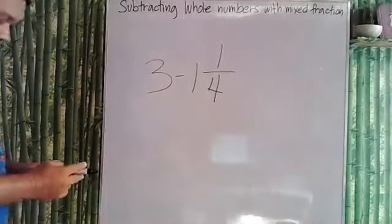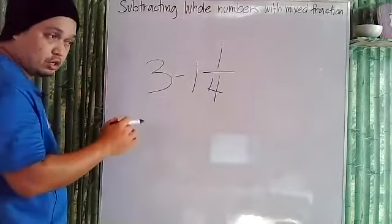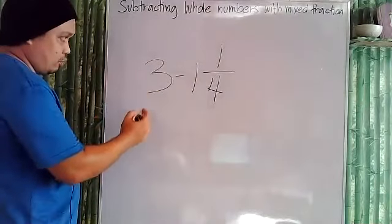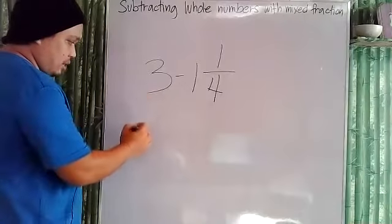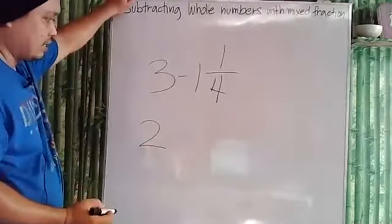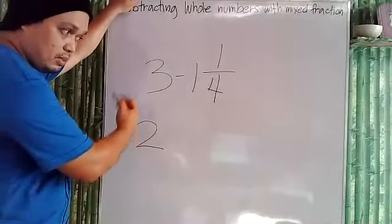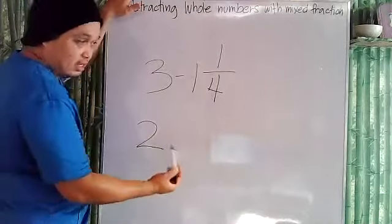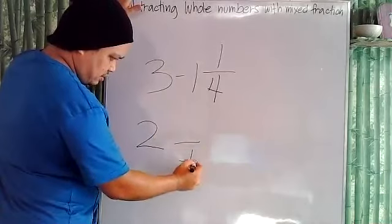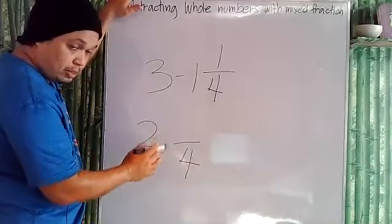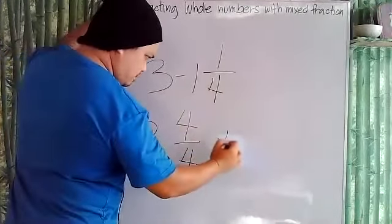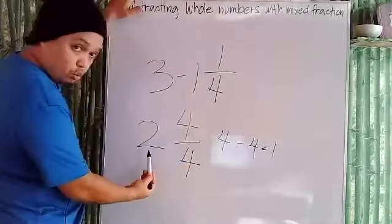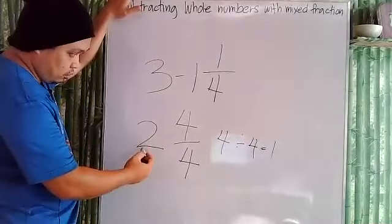To change the whole number into a mixed number, we borrow one from three. Three minus one becomes two. Now we add that one as a fraction by following the denominator — the denominator is four, so the numerator must also be four, because four divided by four equals one. One plus two is three, so two and four-fourths equals three.